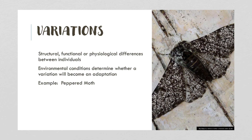Environmental conditions will determine whether a variation will become an adaptation. Peppered moths is our example, and we'll actually do an activity with this. They come in two different variations: dark peppered moths and light peppered moths. The dark peppered moths don't show up very well on dark trees, and the white peppered moths don't show up very well on white trees. So depending on their environment, white moths might be favored or dark moths might be favored — meaning their variation could be an adaptation.